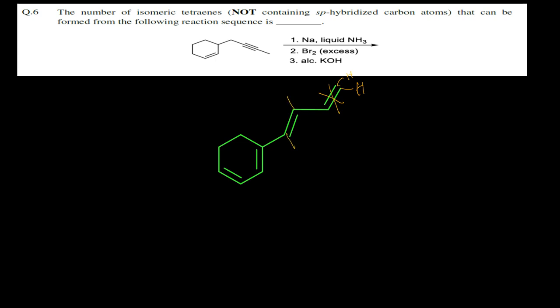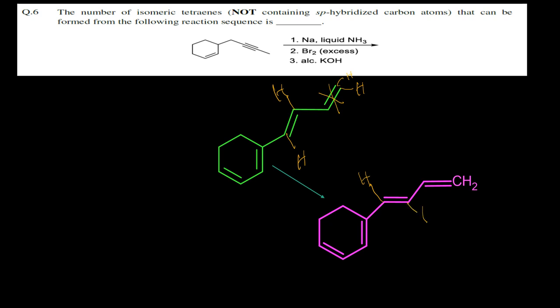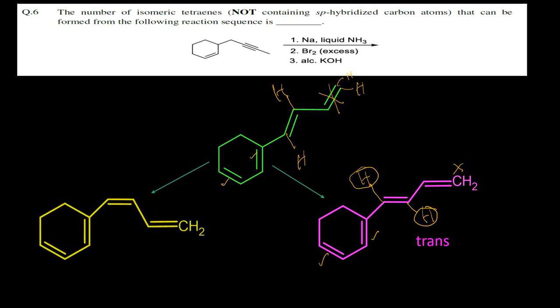Looking at this particular system, the protons are all opposite to each other, giving a trans geometry. This trans structure is represented clearly so the geometry is understood. This is the only position where the geometry can change; at the other positions, the geometries are fixed and will not change. The next molecule will be the one where the two hydrogen atoms are cis to each other — that is all.